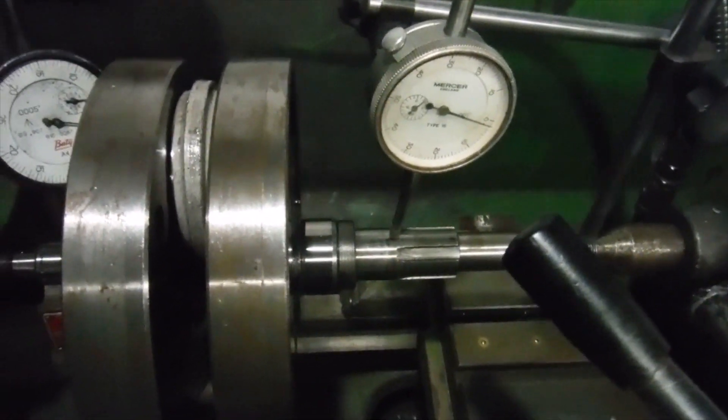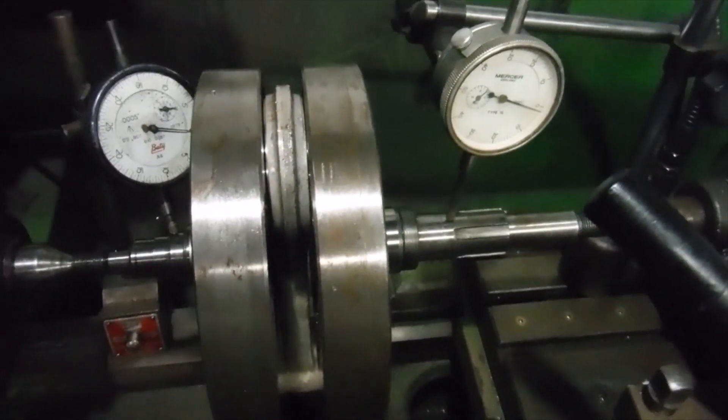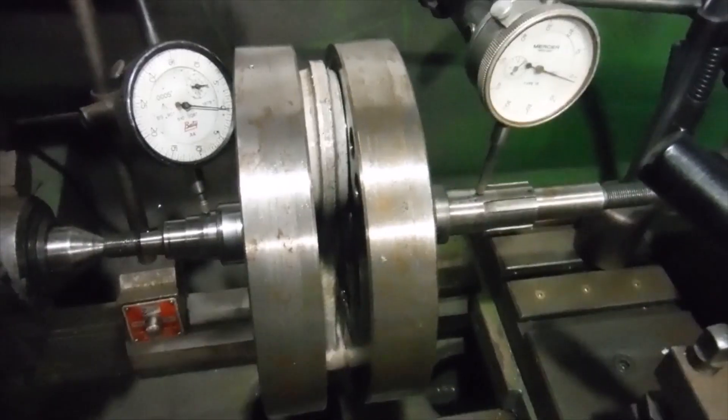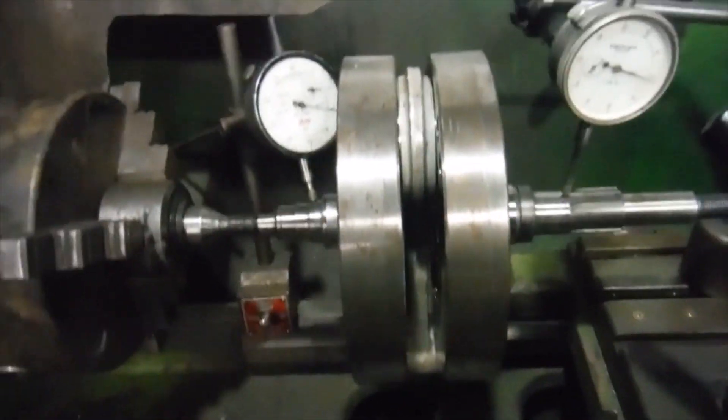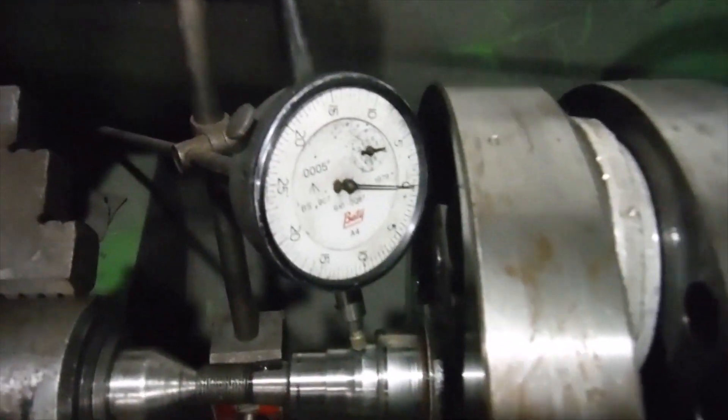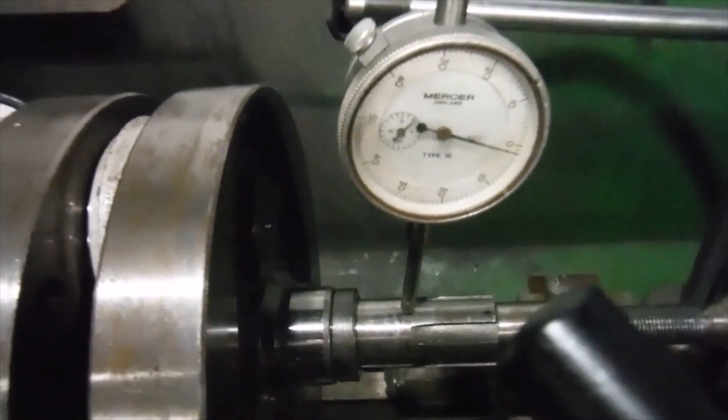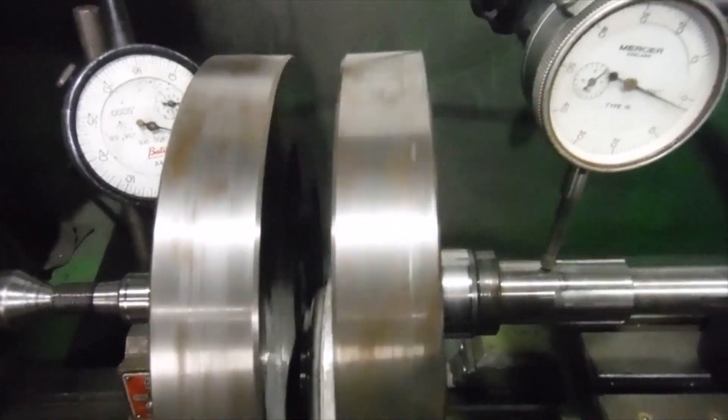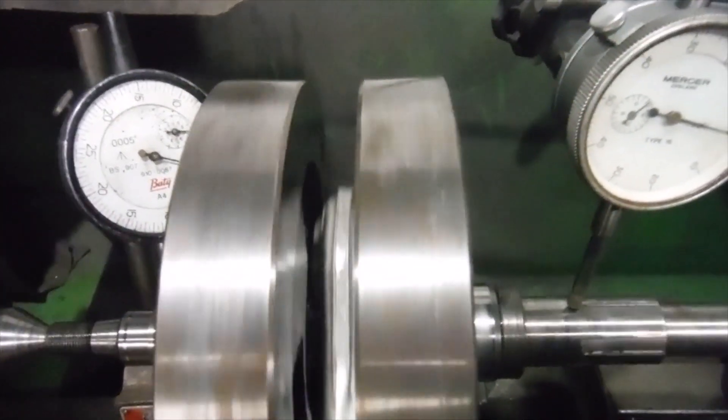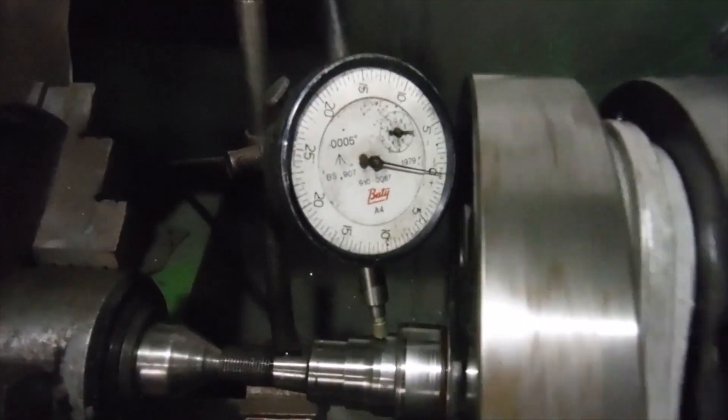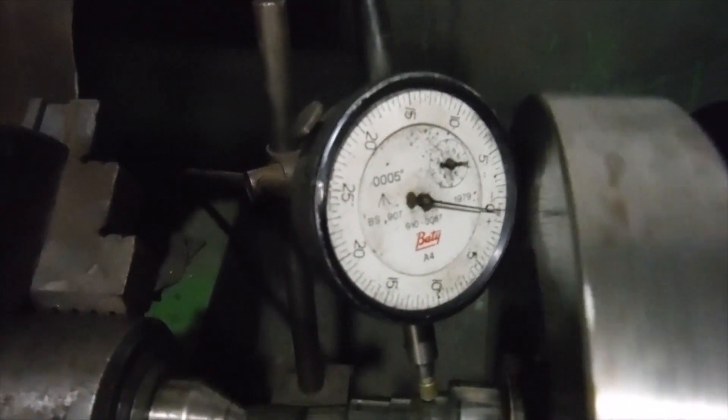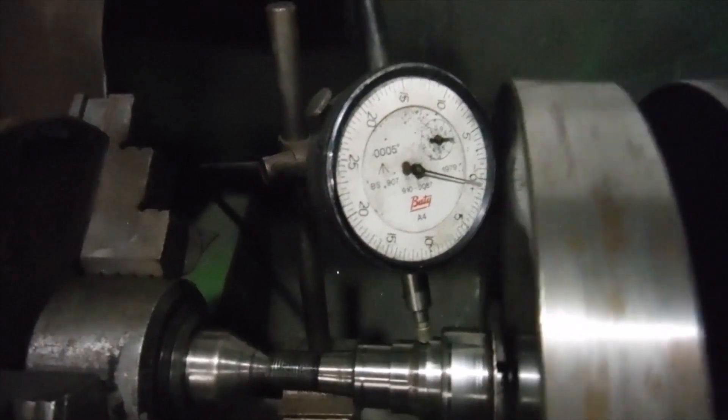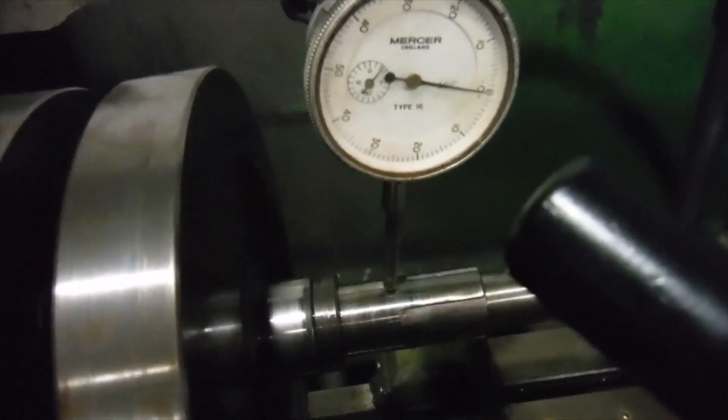I put the crank between the centers and I've got the clocks on them both reading in thousandths of an inch as usual. This is what we've got. We've got one thousandth of an inch on the timing side.